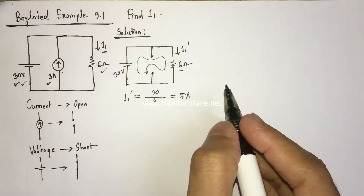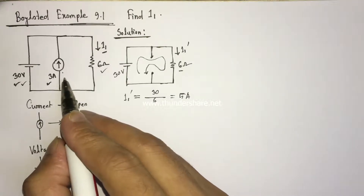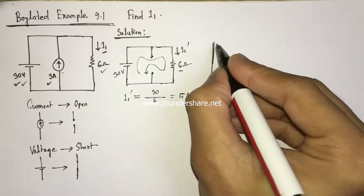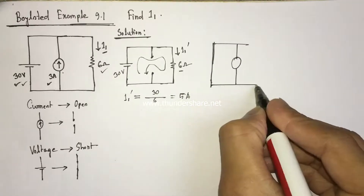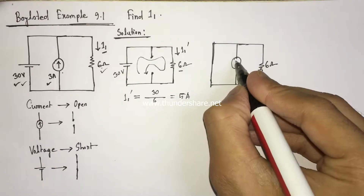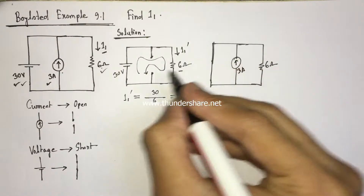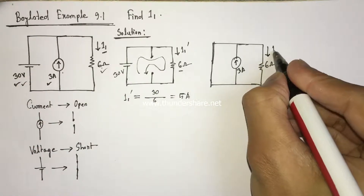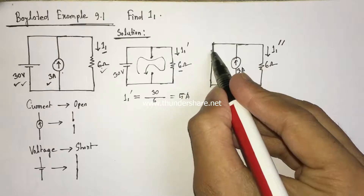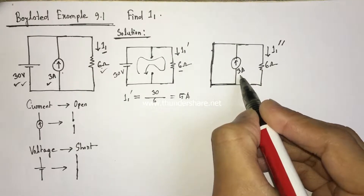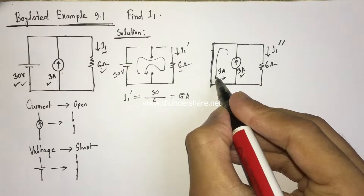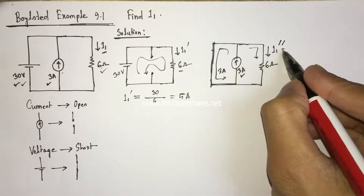Now let us consider the effect of the current source. The equivalent circuit has the voltage source replaced by a short circuit. We have the 3 ampere current source and the 6 ohm resistance. Let the current be I1 double prime. We see that the 3 ampere current source is short circuited, so all 3 ampere current will flow through that short circuit path, meaning the current flowing through the 6 ohm resistance will be 0 ampere.